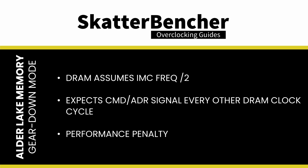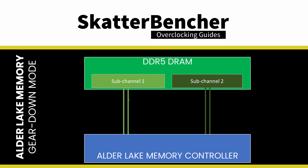This comes of course with a performance penalty. To understand why there is a performance penalty, we need to touch a little on how memory works. On DDR5 memory, there are two buses: one command address bus and one data bus.